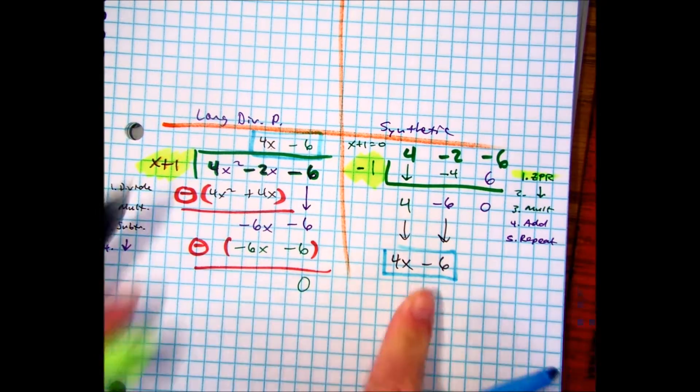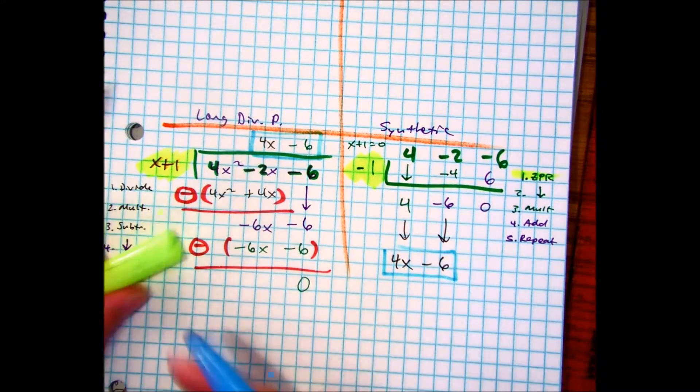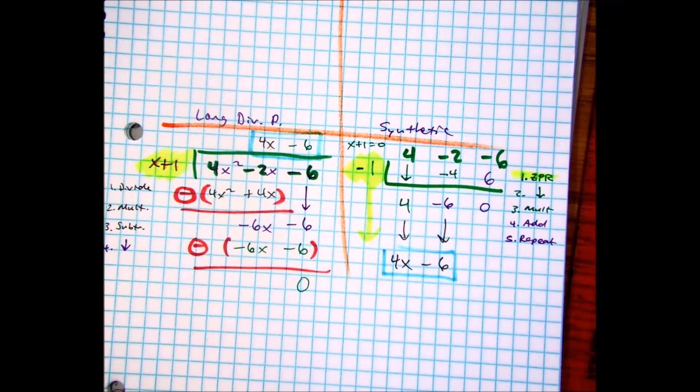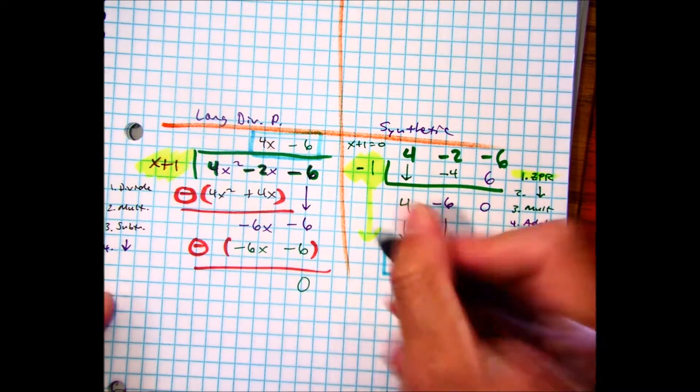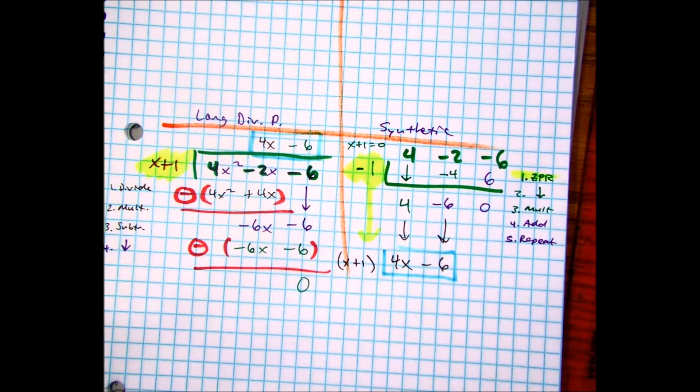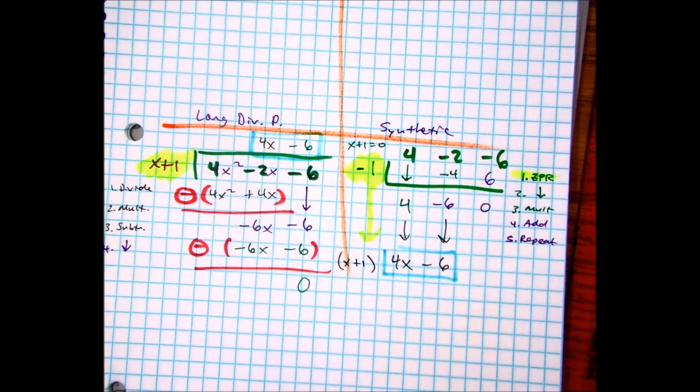Do you see that in blue? And then I also want to show you the yellow. If you made that a binomial, this would be x plus 1. Do you see that? I thought it was that in yellow.